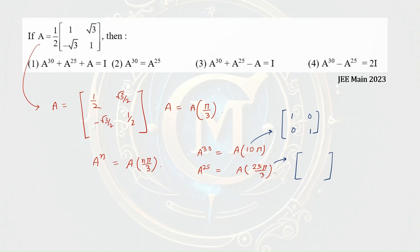Now, A to the power 25 will be A of 25 pi by 3. We can write 25 pi by 3 as 24 pi by 3 plus pi by 3, which is 8 pi plus pi by 3. So A to the power 25 equals A of pi by 3, which is A itself. Substituting these values into the options, option 3 is the correct answer.